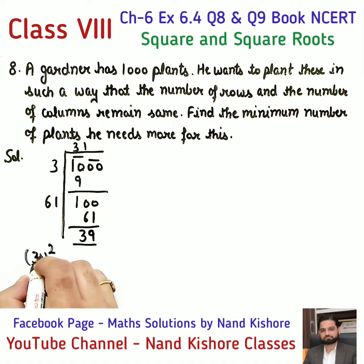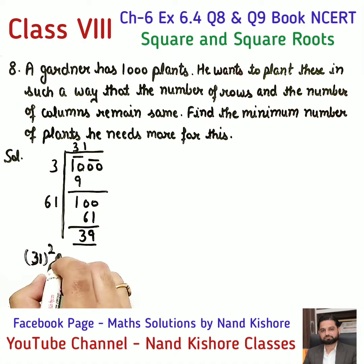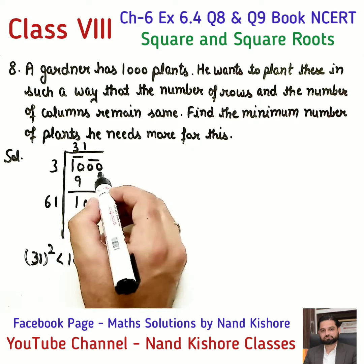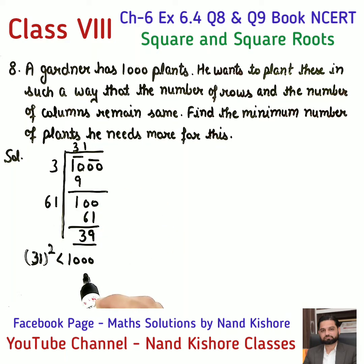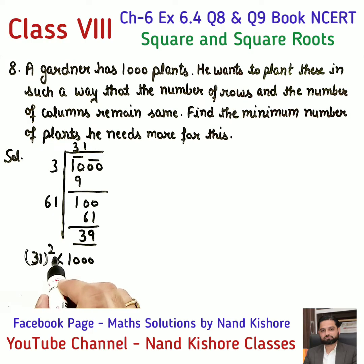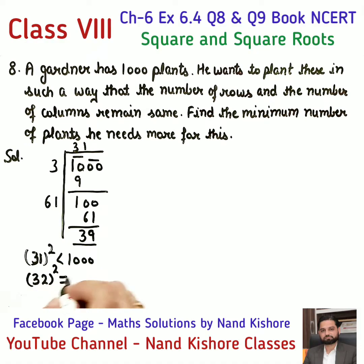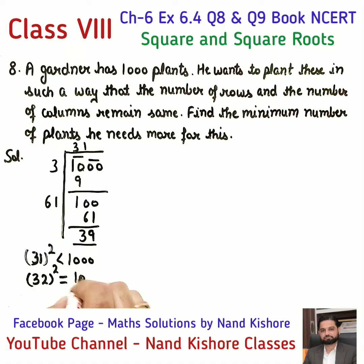The remainder is 39, which is less than 1000. We get 31 and then 32. So the result is 1024.